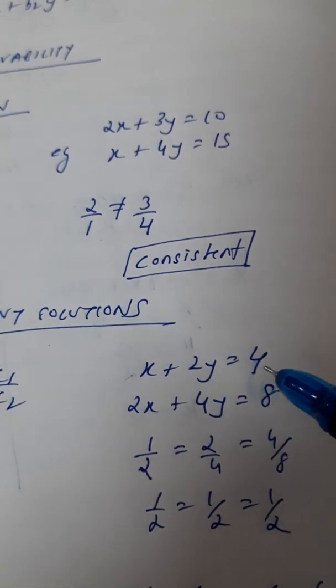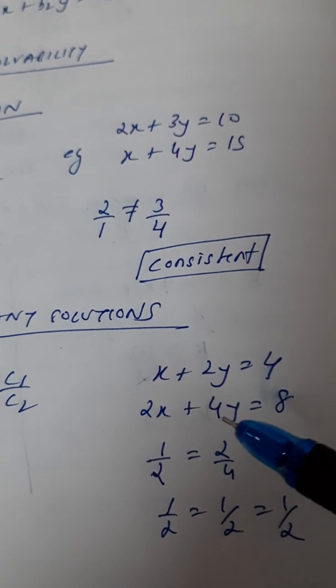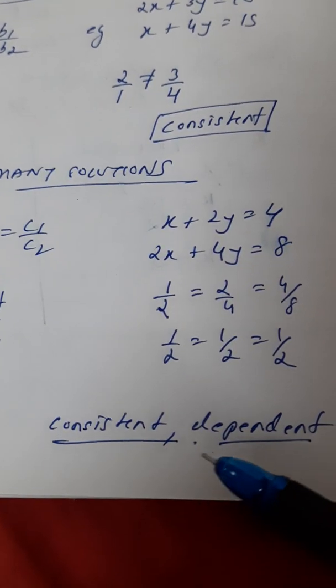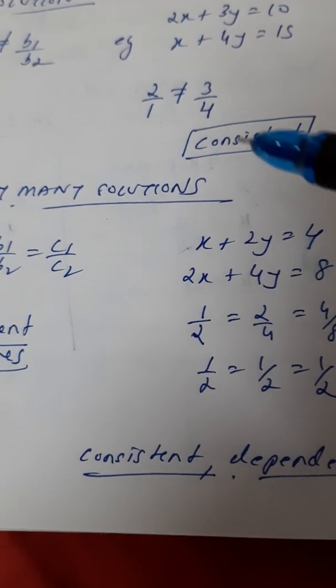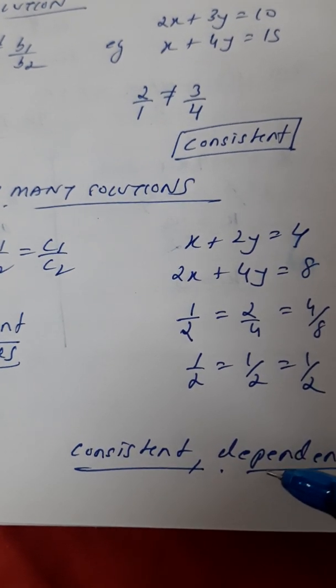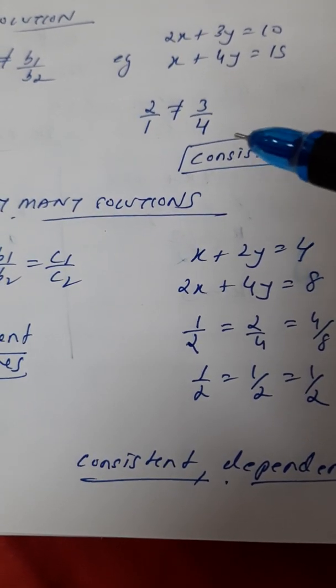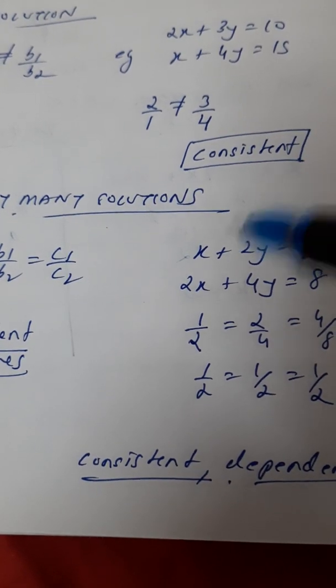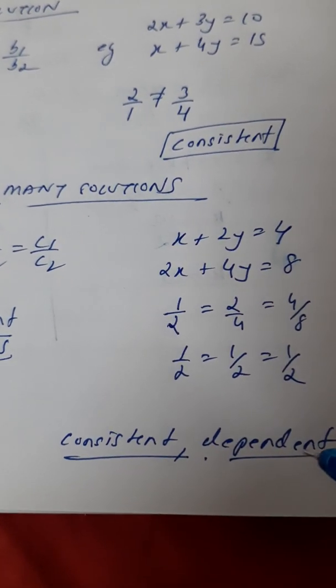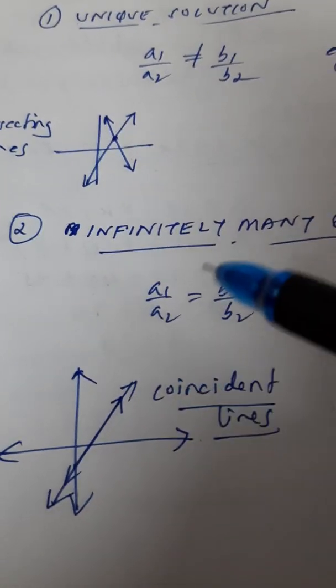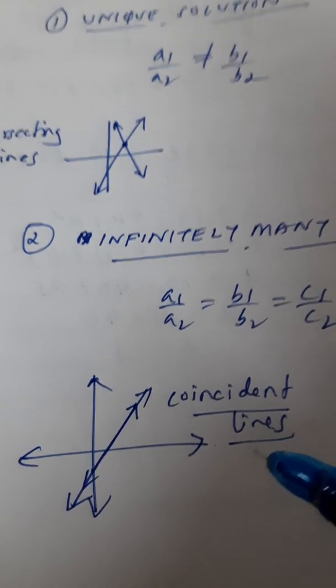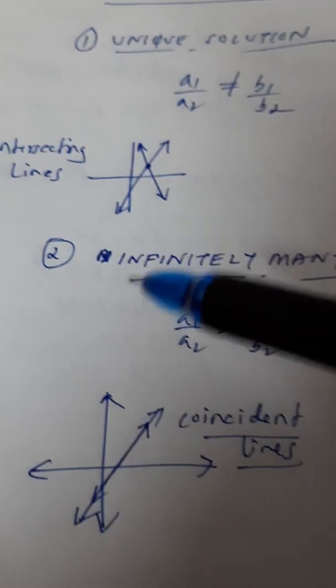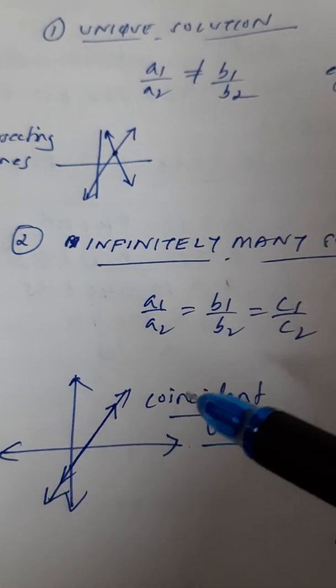So, these type of linear equations when we solve will have infinitely many solutions. So, this is also called consistent. But it is called dependent also. Consistent and dependent. So, consistent means it has a unique solution. Consistent and dependent means it has infinitely many solutions. So, both are consistent. So, in order to distinguish between both, we will write this as only consistent and this as consistent and dependent. And if you plot a graph for infinitely many solutions, you will get two lines, one on top of each other. So, these are called coincident lines.